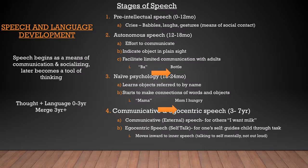That brings us into the naive psychology speech stage, occurring between one-and-a-half and two years old. This is when they start to make connections — although not concrete, it's a start. They begin realizing that objects have a name and a word associated with them, making connections between words and objects as well as words and actions. They might say a full word like 'mama' or even invent words. By two years old, 'mama' will hopefully develop into 'mom, I'm hungry' or 'ma, I hungry' — simple requests in short sentences.